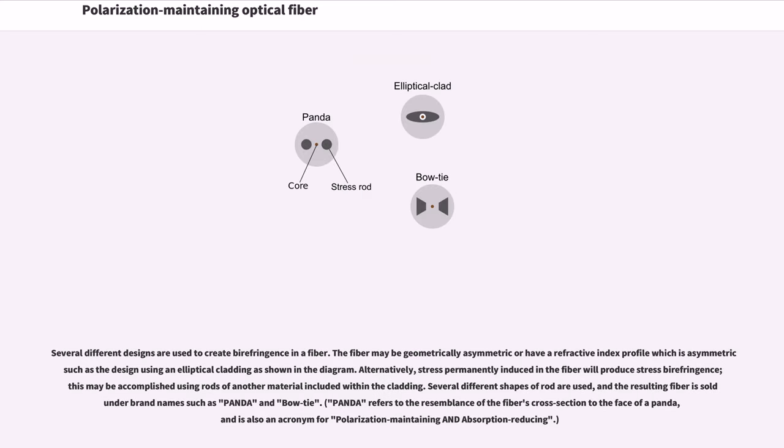Several different designs are used to create birefringence in a fiber. The fiber may be geometrically asymmetric or have a refractive index profile which is asymmetric, such as the design using an elliptical cladding as shown in the diagram. Alternatively, stress permanently induced in the fiber will produce stress birefringence. This may be accomplished using rods of another material included within the cladding. Several different shapes of rods are used, and the resulting fiber is sold under brand names such as Panda and Bowtie.